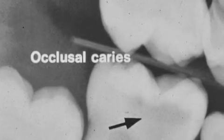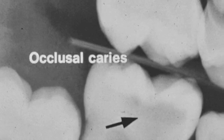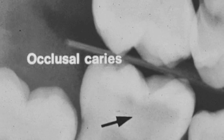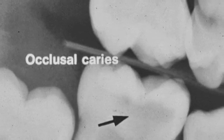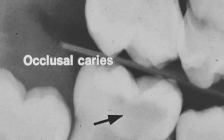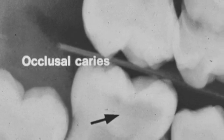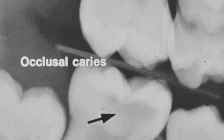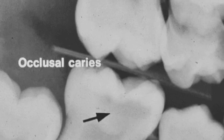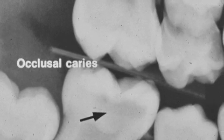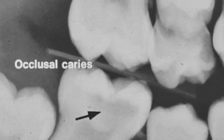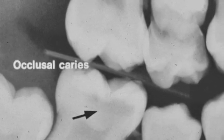Tooth number 30 has occlusal caries seen as a radiolucency along the dentinoenamel junction. Notice that the enamel is intact. Therefore x-rays are crucial for observing and finding occlusal caries. Is this a C1, 2, 3, or 4 radiographic caries classification?